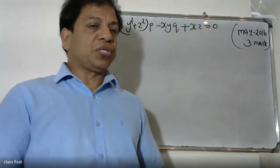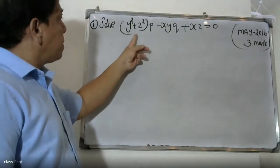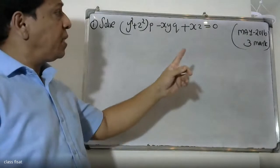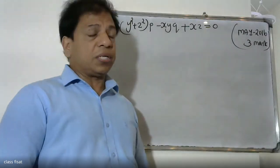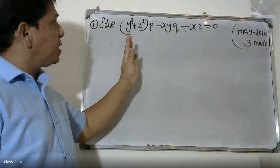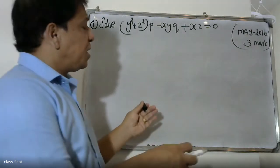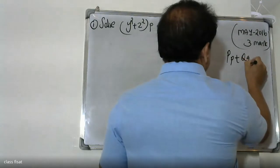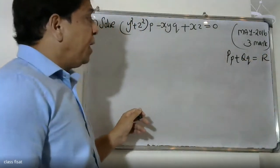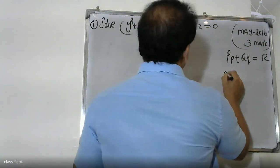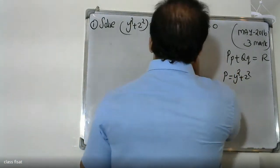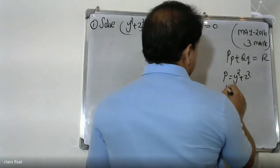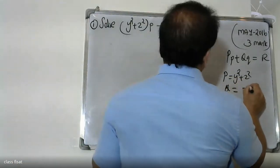Good morning friends. The question to solve: the processor is going to be minus xy into q plus xz is equal to 0. I get the question and the equation for the grad is the linear equation. The standard form of the PDE is Pp + Qq = R, where P is equal to y squared plus xz.